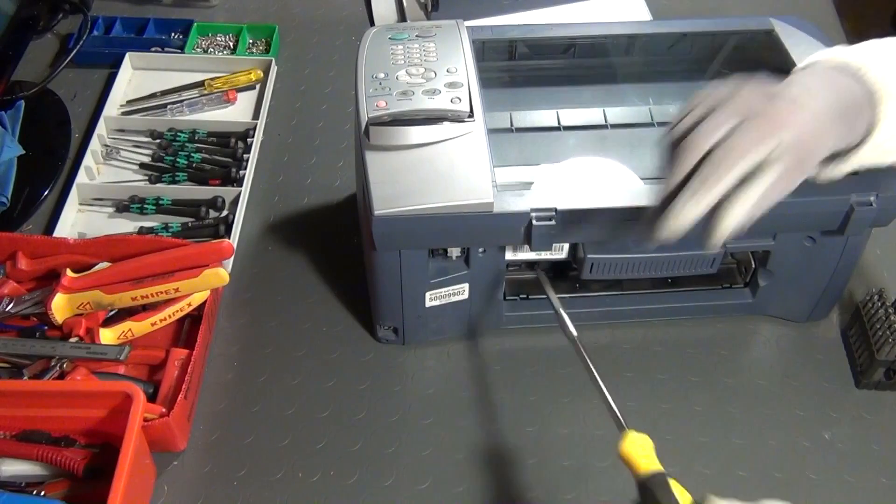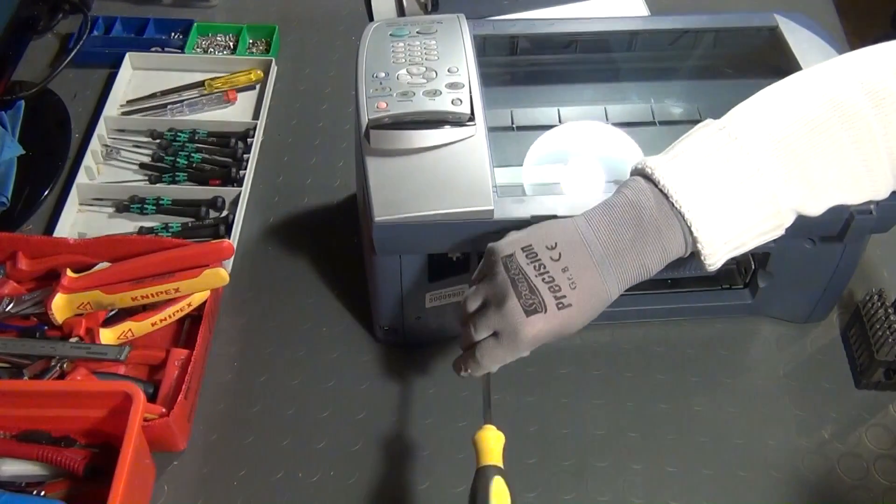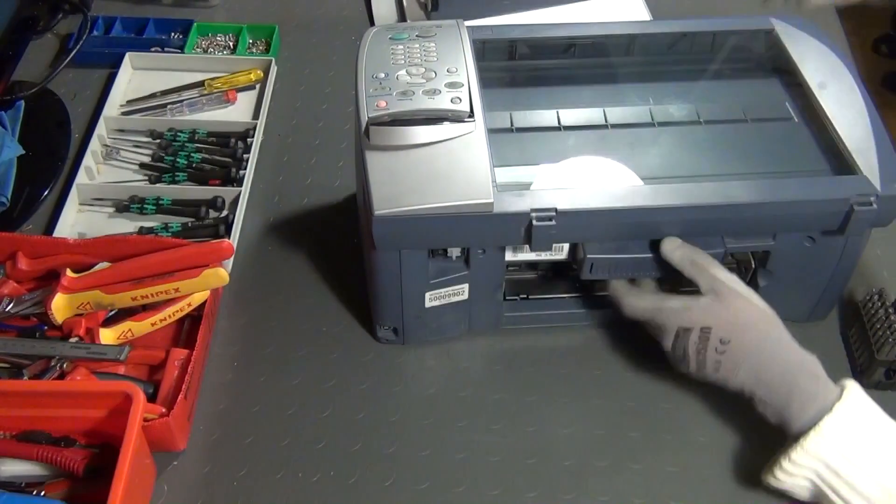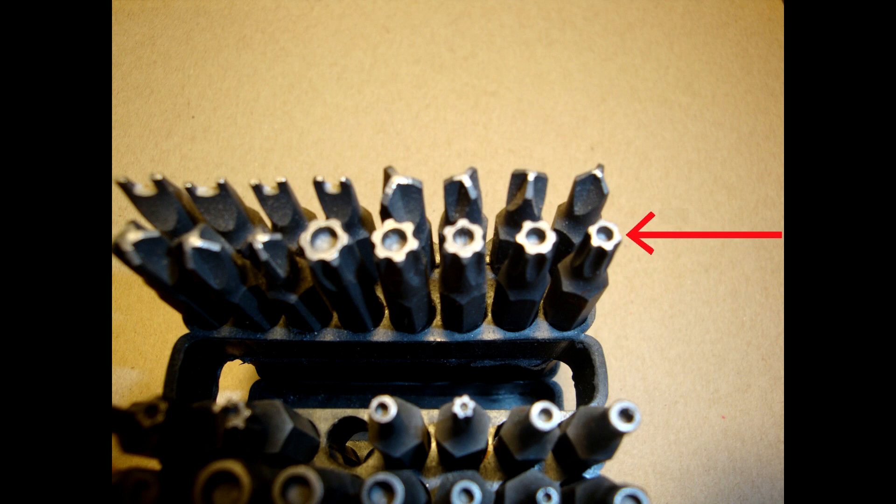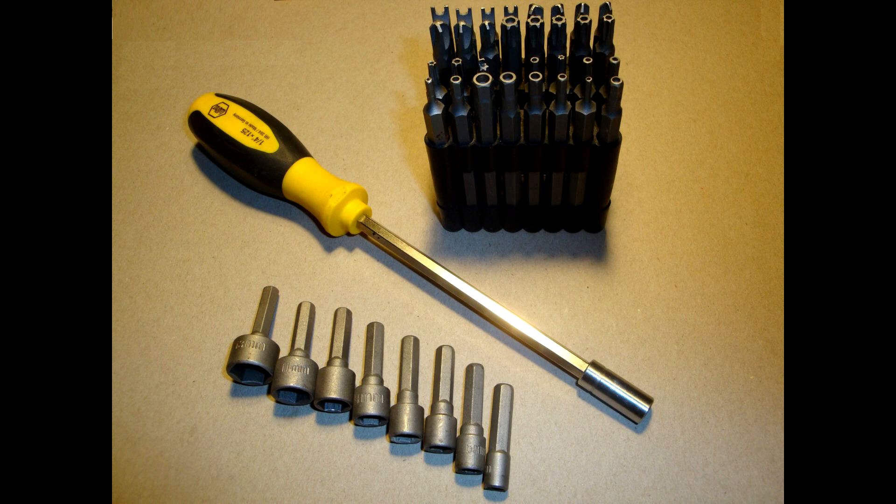After that, all accessible screws on the back side and/or on the bottom should be removed. For this you will most probably need a set of Torx or even security Torx screwdrivers of different sizes. The cheapest way to go is to buy one with exchangeable bits like the one I use in this video.